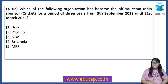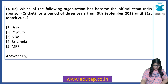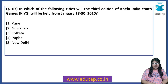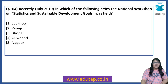Which of the following organizations has become the official Team India sponsor for a period of three years from 5th September 2019 until 31st March 2022? This organization has replaced OPPO. The answer is Byju's, a Bangalore-based company. In which of the following cities will the third edition of Khelo India Youth Games be held from January 18 to 30, 2020? The answer is Guwahati.